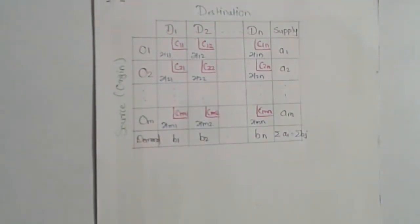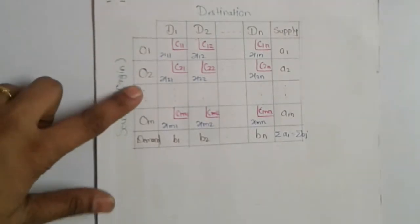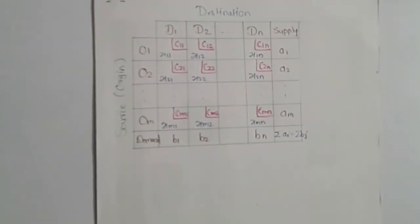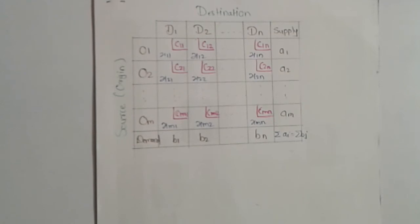C_ij are the cost per unit from the various origins to the various destinations, and X_ij are the allocations whose value is the minimum of the demand and the supply.